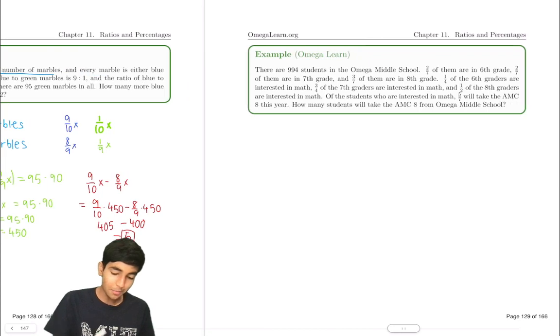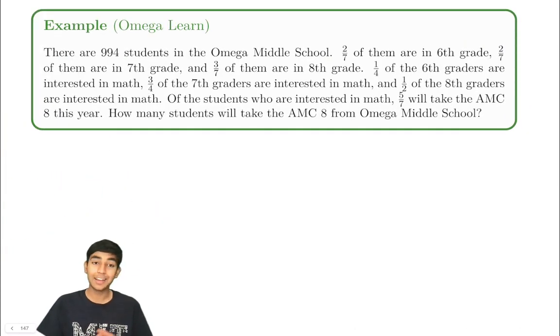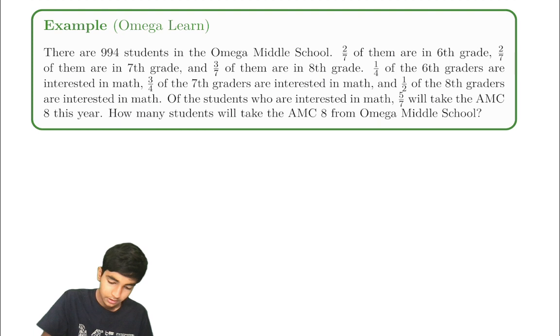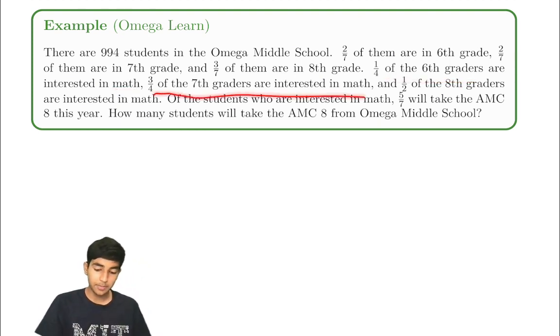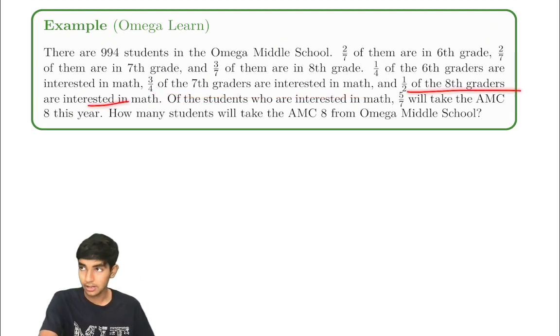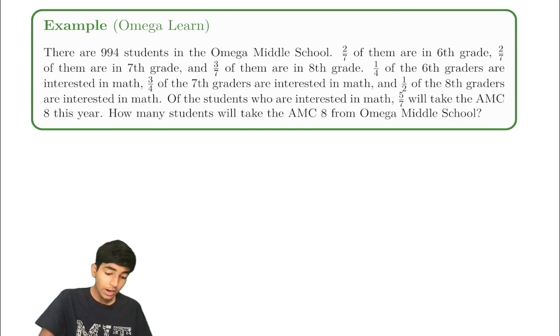Let's now explore a more interesting problem. There are 994 students in Omega Middle School. Two sevenths are in sixth grade. Two sevenths are in seventh grade. And three sevenths of them are in eighth grade. And one fourth of the sixth graders are interested in math. Three fourths of the seventh graders are interested in math. And half of the eighth graders are interested in math. Of the students who are interested in math, five sevenths will take the AMC 8 competition this year. How many students will take the AMC 8 from Omega Middle School?